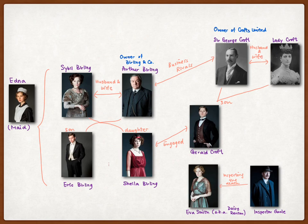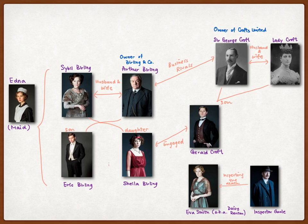These are the characters mentioned in Act 1, including the Birling family: Arthur Birling, the owner of Birling and Company; Sybil Birling, the wife; Eric Birling, the son; Sheila Birling, the daughter. And Sheila is engaged to Gerald Croft, who is the son of Sir George Croft and Lady Croft.